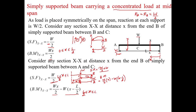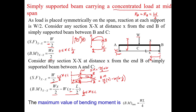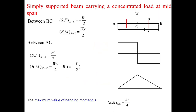So we can obtain the expressions for shear force and bending moment diagram in this way. The maximum value of bending moment is WL/4, occurring at X = L/2. We also have the equations for zone CA for both shear force and bending moment.